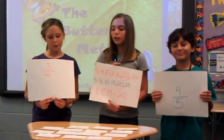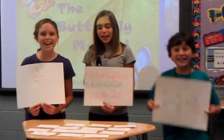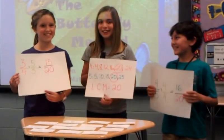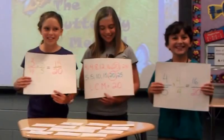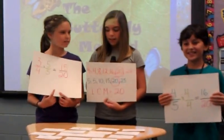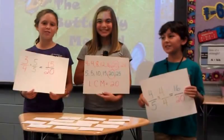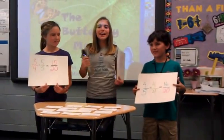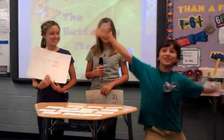Let's look for a common multiple. Twentieths! We all speak in twentieths. I am fifteen twentieths. And I am sixteen twentieths. Together we are thirty-one twentieths, or one and eleven twentieths.